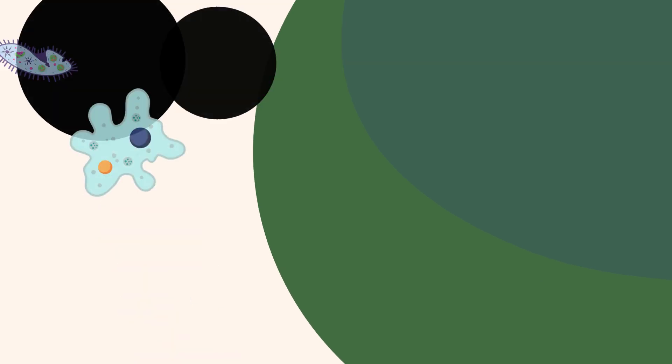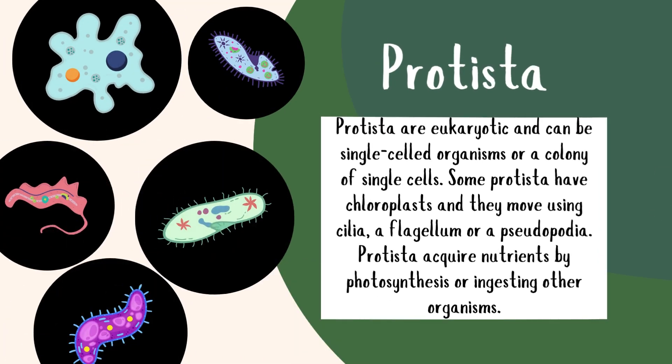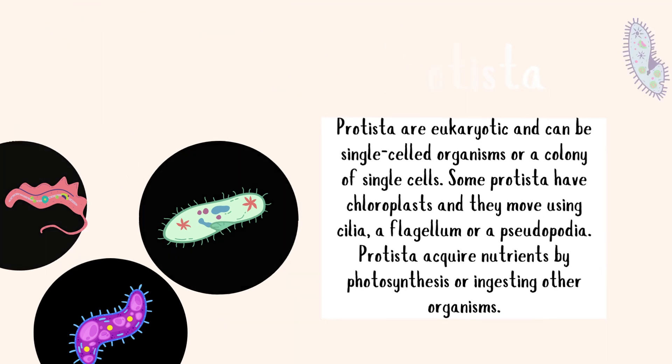Protists are mostly single-celled eukaryotes. Some can photosynthesize, while others ingest food. They move using cilia, flagella, or pseudopodia. Protists are incredibly diverse and often serve as the foundation of aquatic food chains.